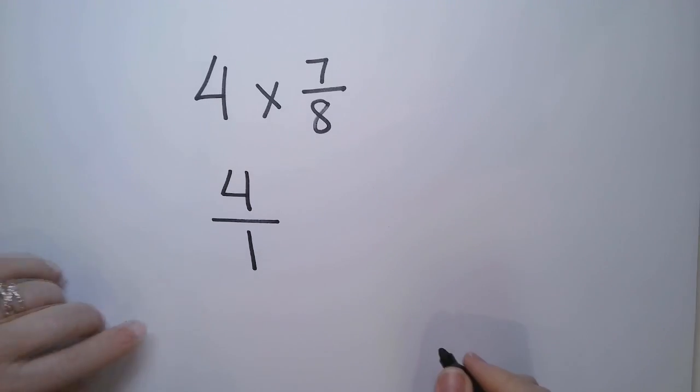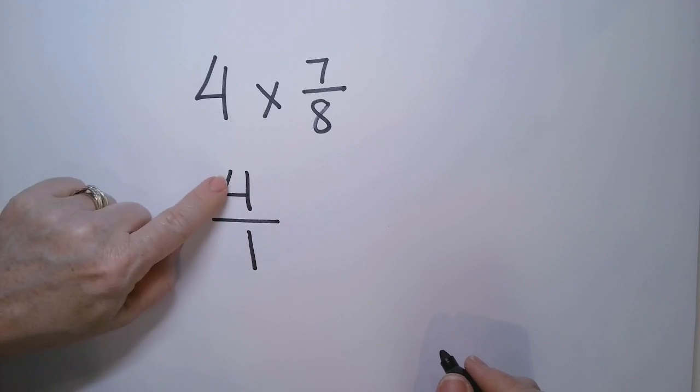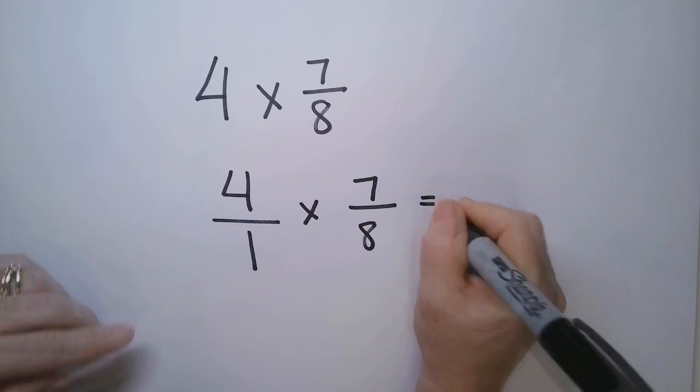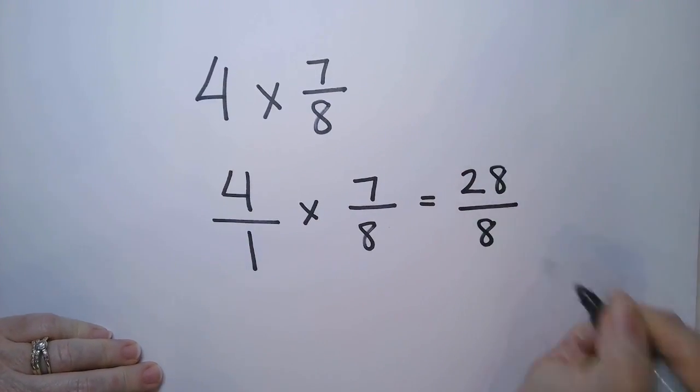Because it's a whole number, the denominator's always 1, because 1 unit is 1 whole section. There's 4 of them. Times 7 over 8. So this is 28 on top and 8 on the bottom.